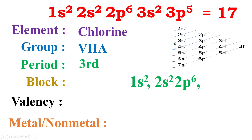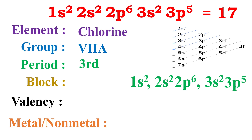After 2p, we go to 3s. The S sub-shell can hold only 2 electrons. Counting so far: 2 plus 2 plus 6 plus 2 = 12. So 5 electrons are left. Next is 3p, and P can hold 6 electrons. So 3p holds the remaining 5 electrons — that's chlorine. This way the last electron entered into the P sub-shell of the outermost shell. If the last electron of an element enters into the P sub-shell of its outermost shell, then it belongs to the P block.